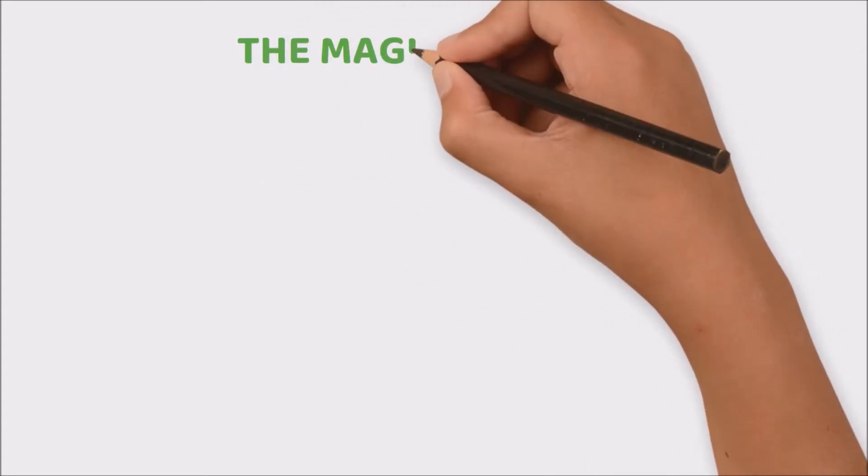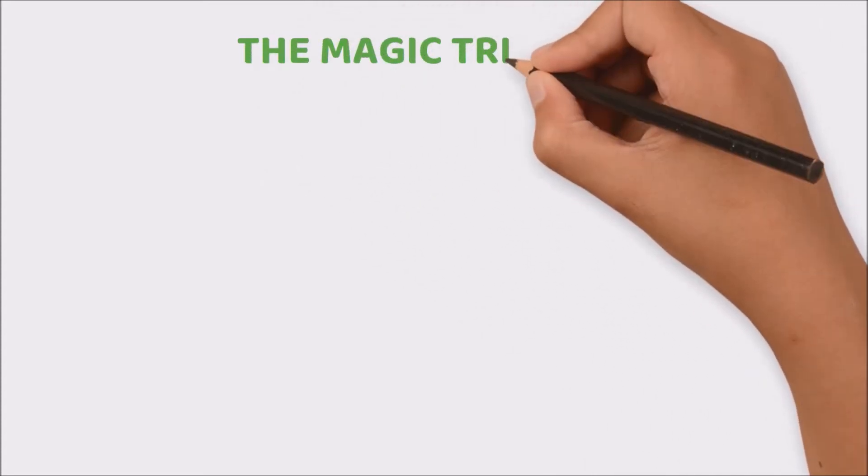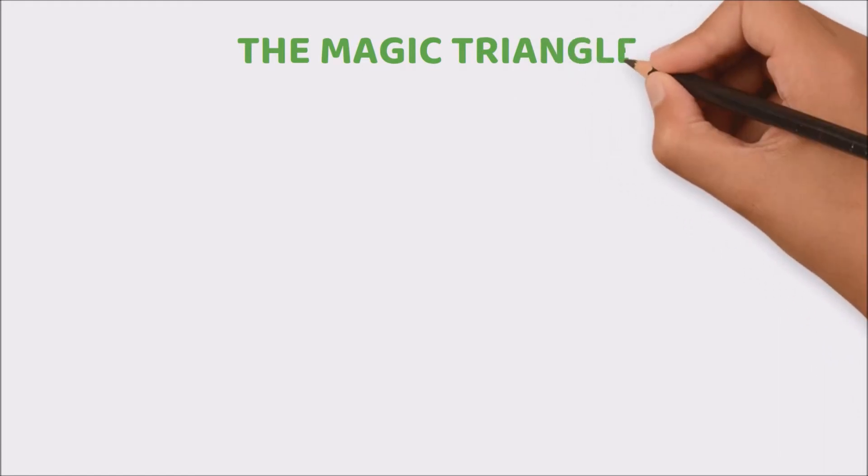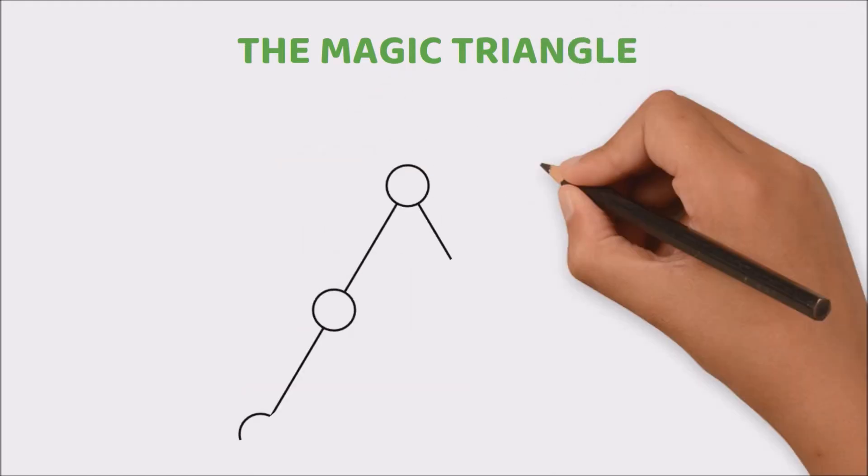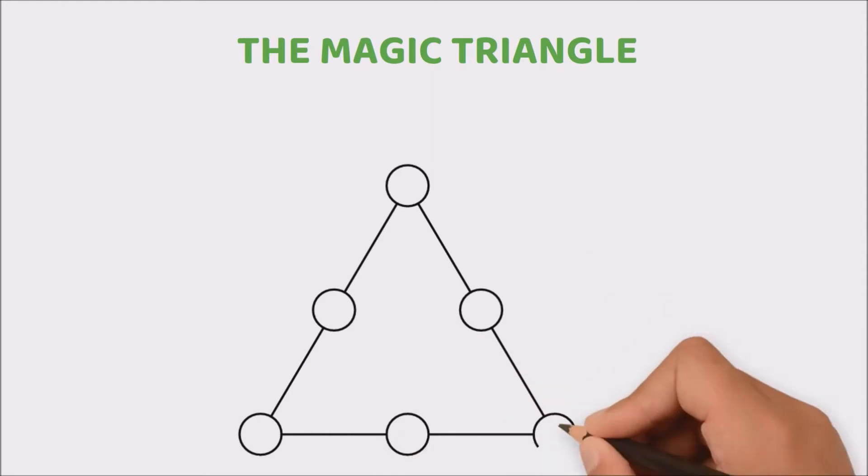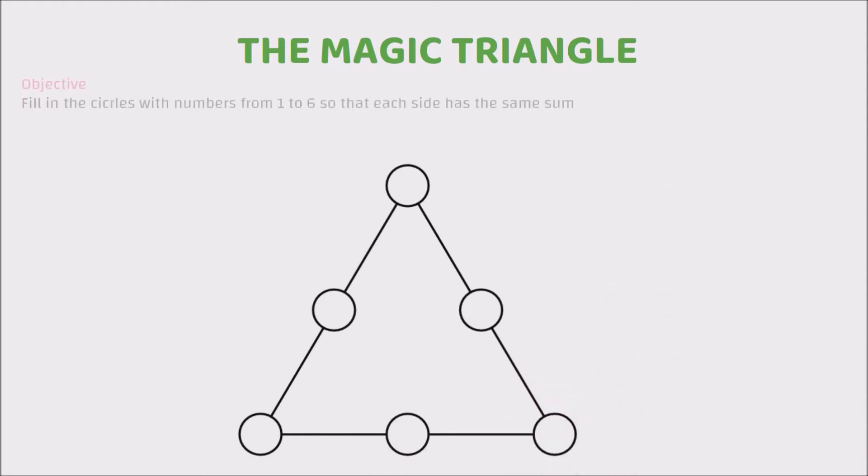Hey guys and welcome back to my channel. Today we will be looking at how to solve this problem known as the magic triangle. The objective is to fill in the circles with numbers from 1 to 6 so that each side has the same sum.